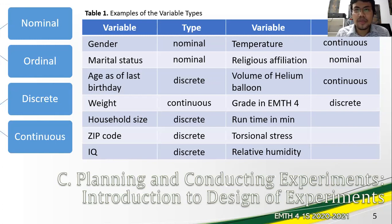Your grade in the subject is discrete. Your runtime in minutes is continuous. The last two variables, torsional stress and relative humidity, which are engineering parameters, are also continuous.